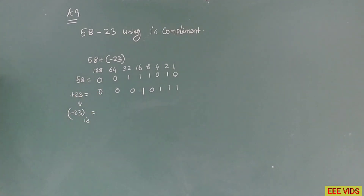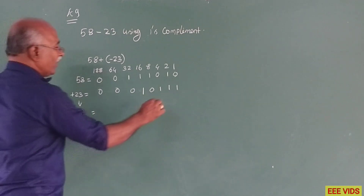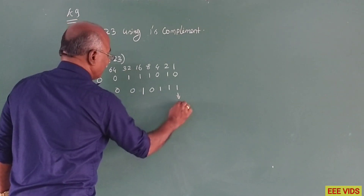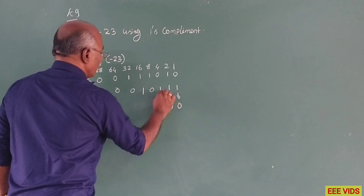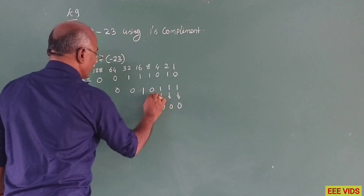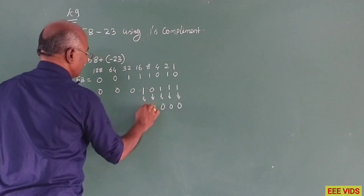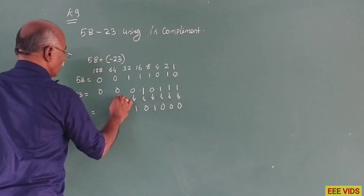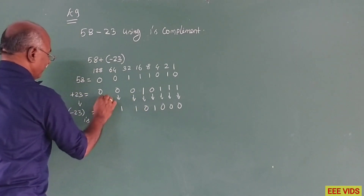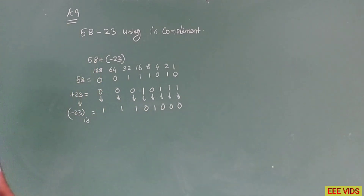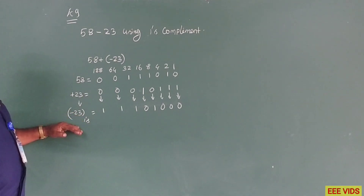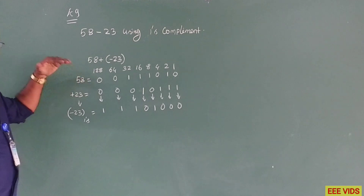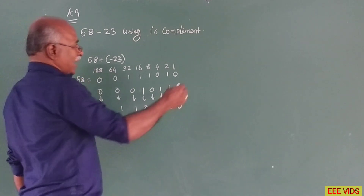So minus 23 — we will apply the one's complement method. If we take the one's complement, we flip all bits: 1, 1, 1, 0, 1, 0, 0, 0, 1. This is the one's complement of minus 23. Now add minus 23 complement to binary of plus 58.